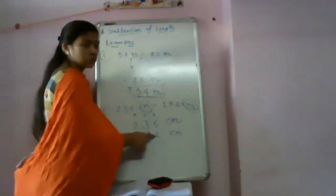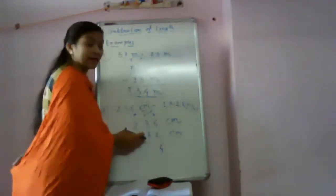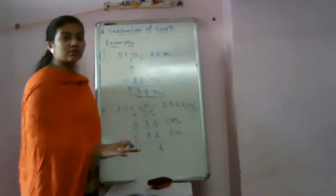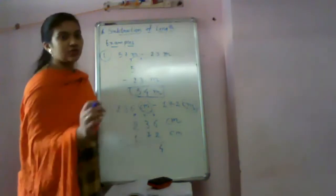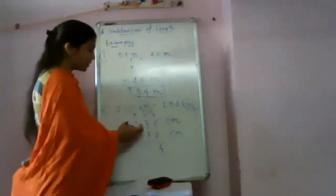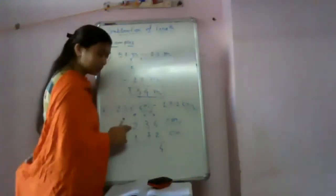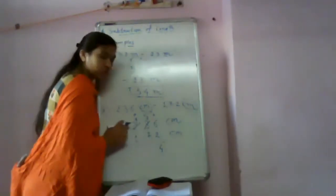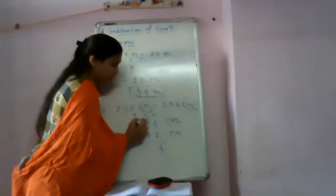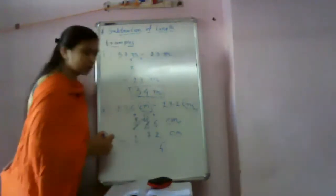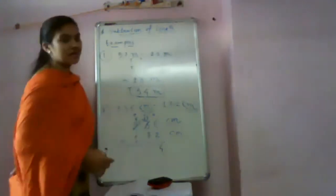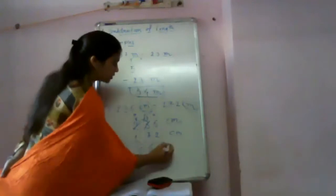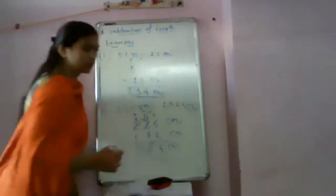Start from the ones place: 6 minus 2 equals 4. Then 3 minus 7 — 3 is the smaller number and 7 is the larger number, so we have to borrow from the previous digit, which is 2. So 2 becomes 1, and 3 becomes 13. 13 minus 7 equals 6. Then 1 minus 1 equals 0. The answer is 64 centimeters. This is your answer.